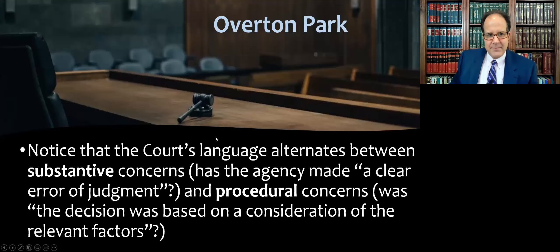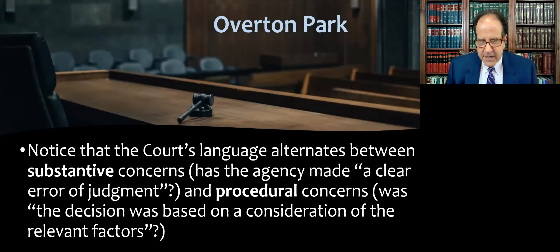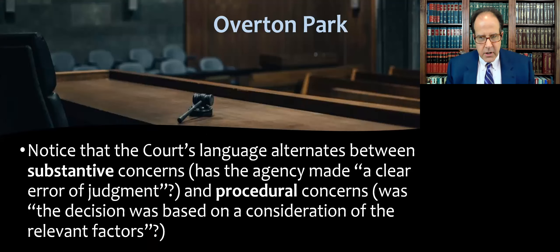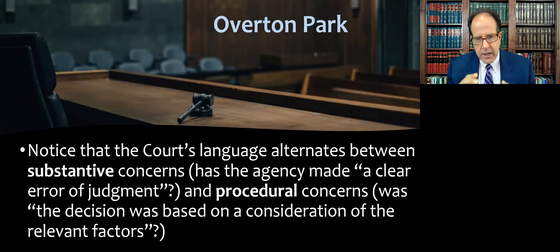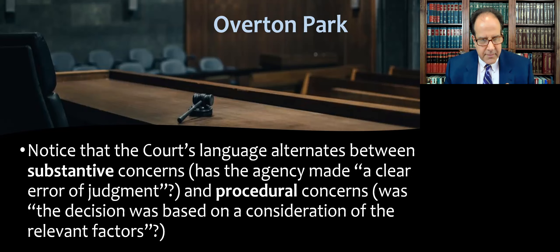As you read this famous opinion, note that the court does something that is either clever or sloppy depending on your perspective. They alternate between articulating substantive concerns — maybe the agency made a clear error of judgment — and procedural concerns — was the decision based on a consideration of the relevant factors. Try to keep that straight in your mind. There's a difference between asking whether the agency had an appropriate decision-making process versus whether the agency is doing the wrong thing substantively. Arbitrary and capricious review is supposed to be focused on the process, but sometimes the two get mixed together.